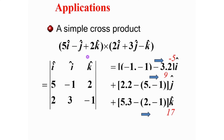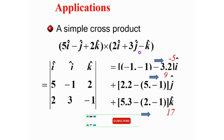Some examples. Show the components: 5i minus 2j plus 2k, and the second vector is minus 2i plus 2j minus k. In component form, the first vector is (5, minus 1, 2) and the second is (2, 3, minus 1).